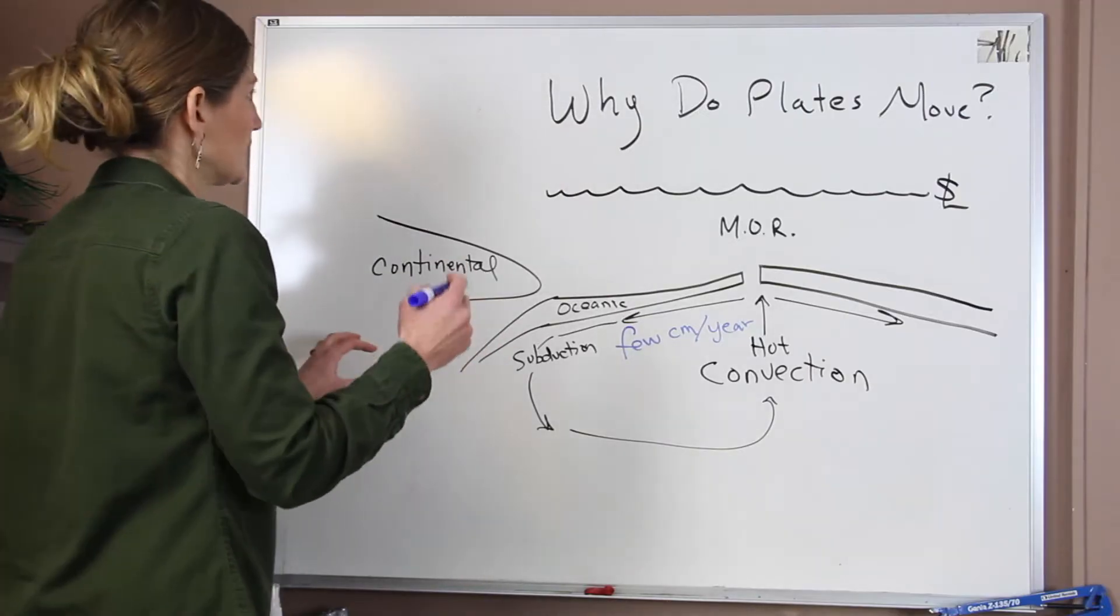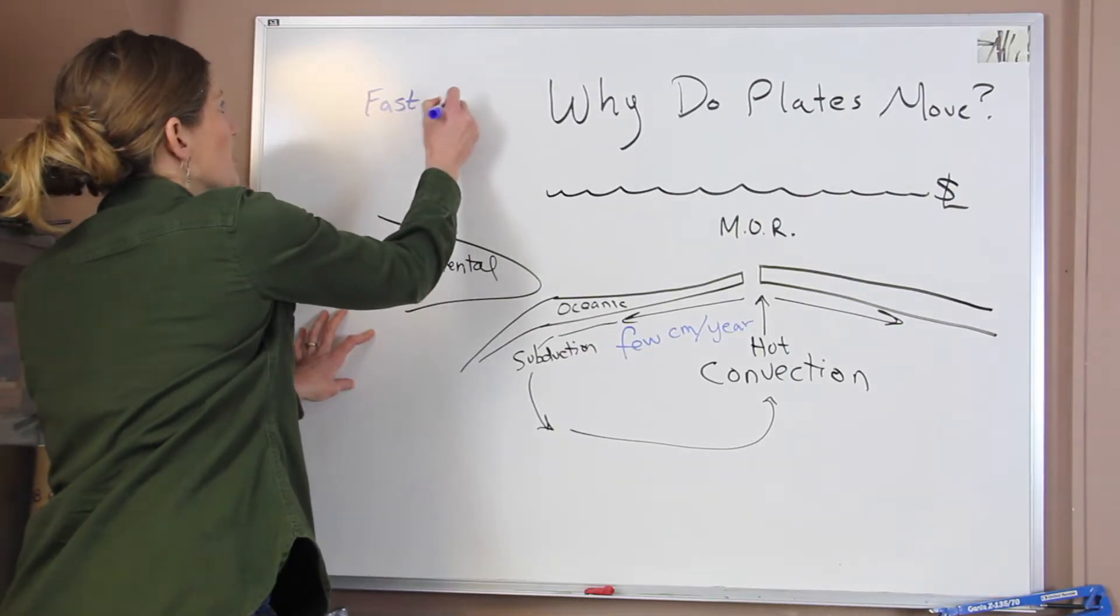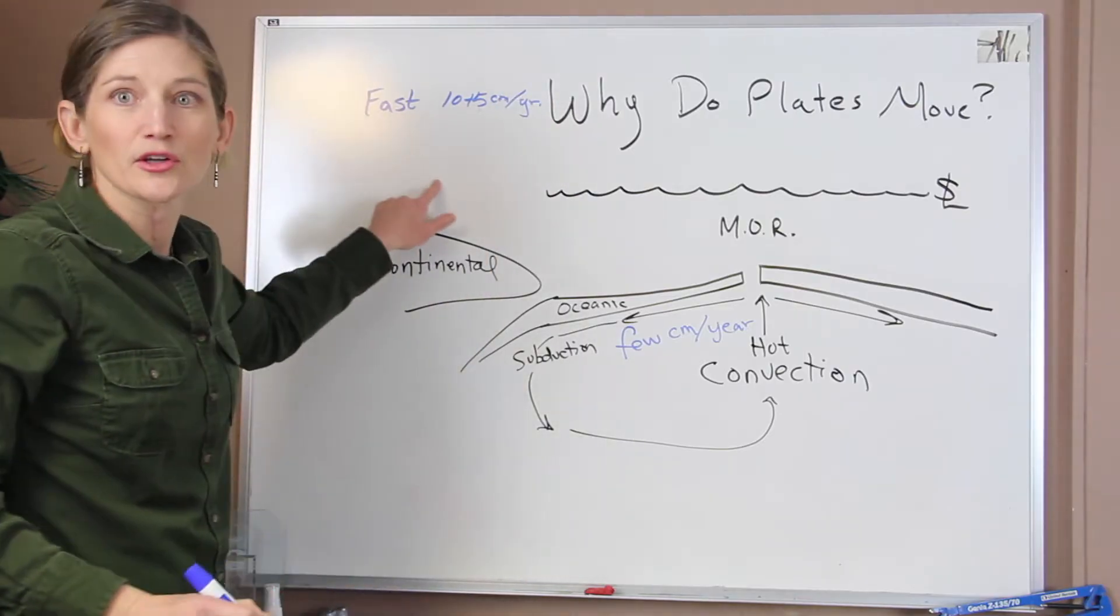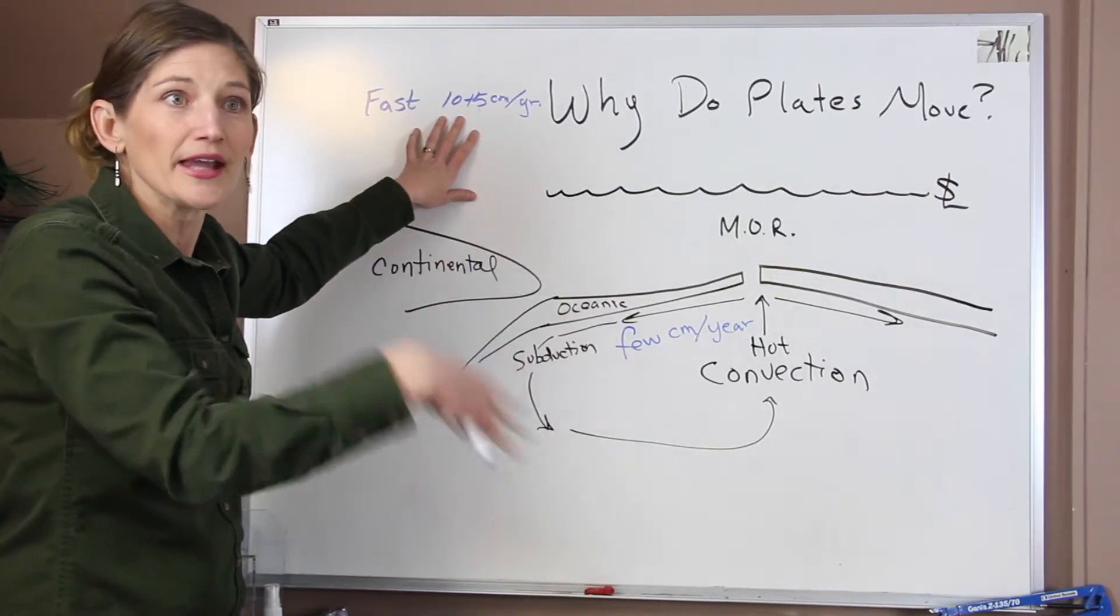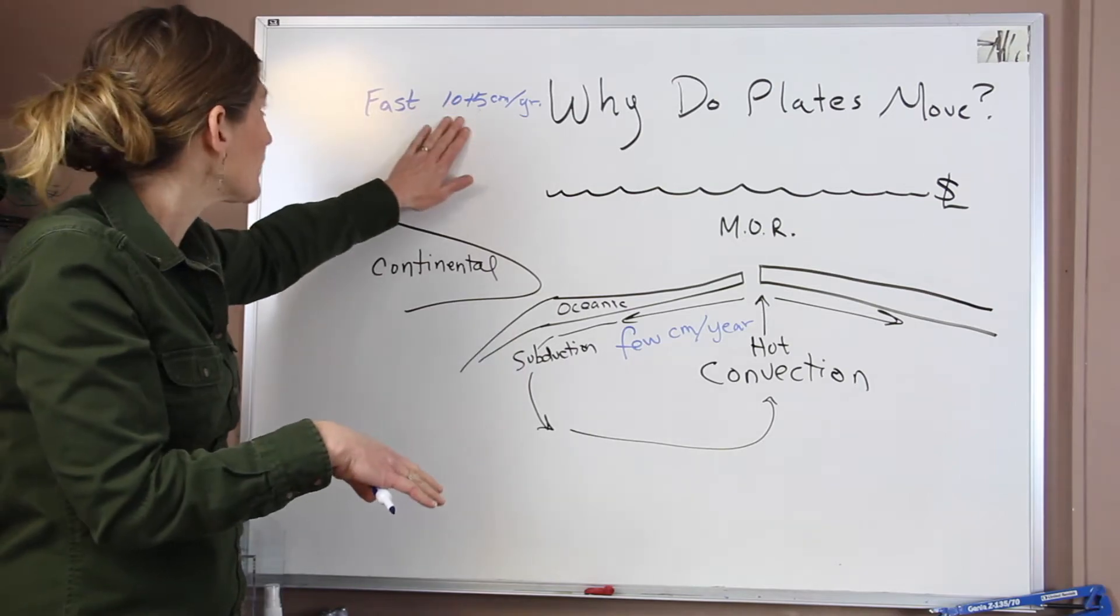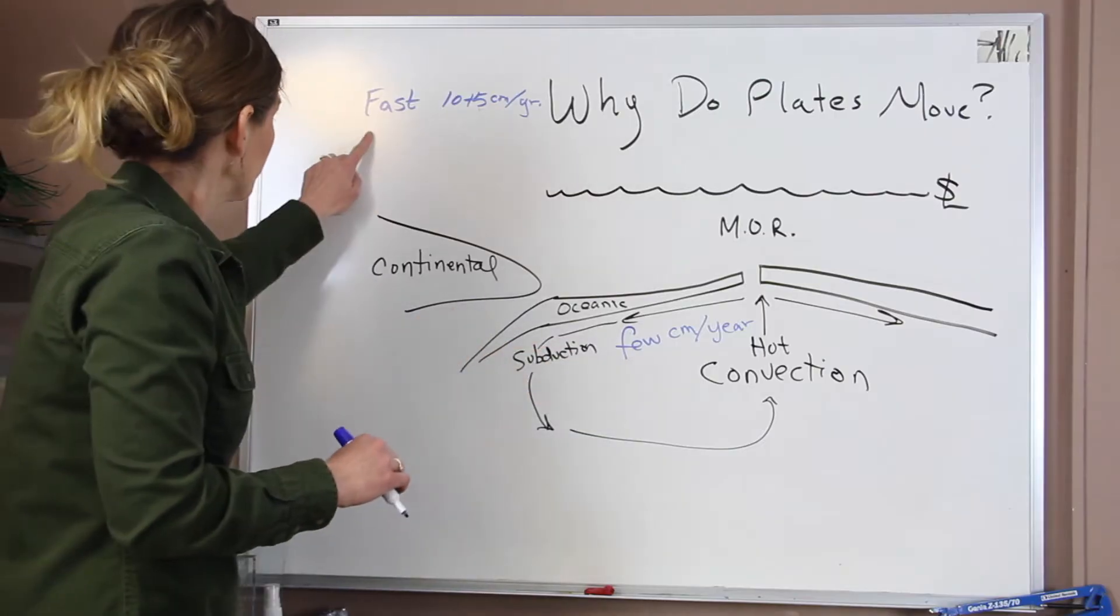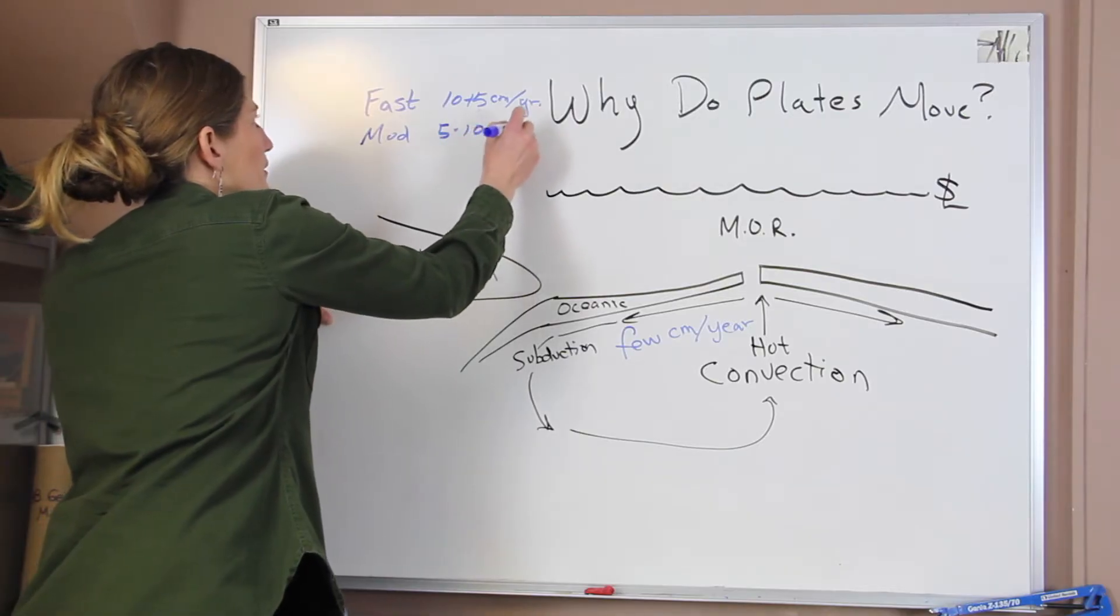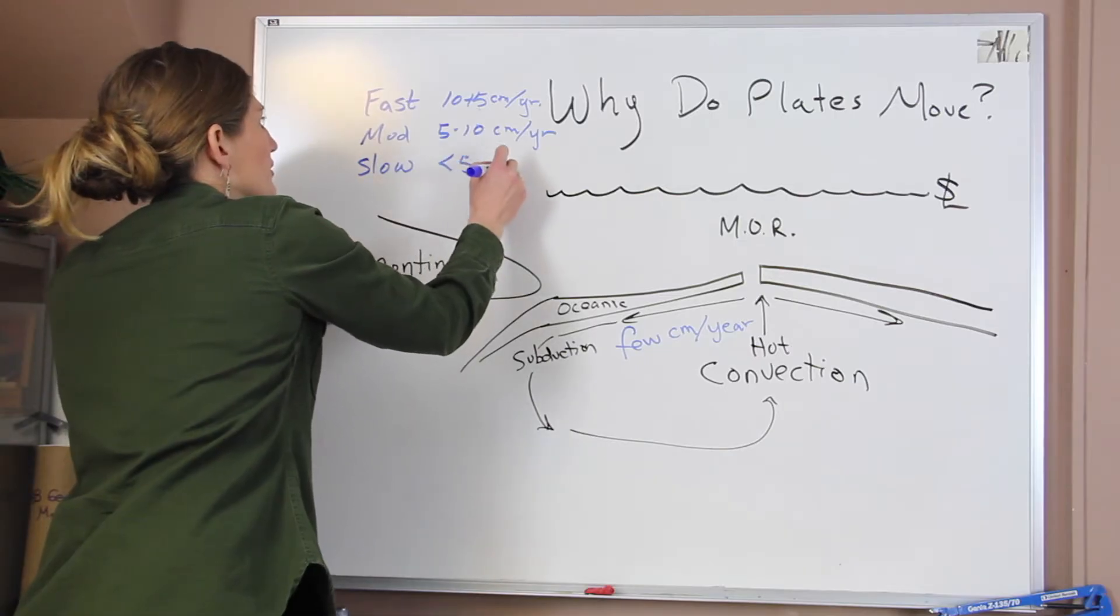But we also have places where our plates move very fast. So we see places, we have fast-moving plates, which are like 10 to 15 centimeters per year. If we wanted to go for some examples, in the Southeast Pacific, around the Nazca plate, we see this fast movement. We see some down by the Tonga Trench where the plates are moving very, very fast. And that does not really align with this few centimeters per year. In other places, we have moderately moving, so that would be like five to 10 centimeters per year. And then we have slow, which would be less than five centimeters per year.